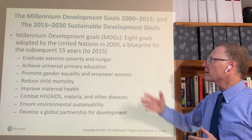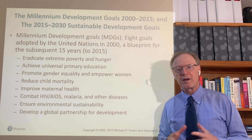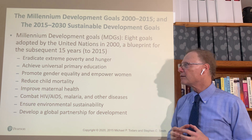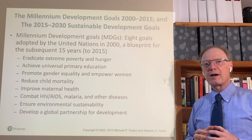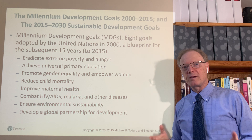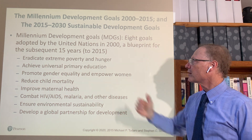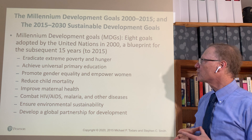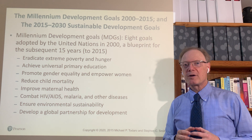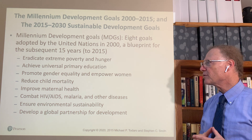Currently we have the Sustainable Development Goals that have been unanimously agreed by the United Nations. They're a set of ambitious goals to be achieved between 2015 and 2030, so we only have 10 years left to achieve them.